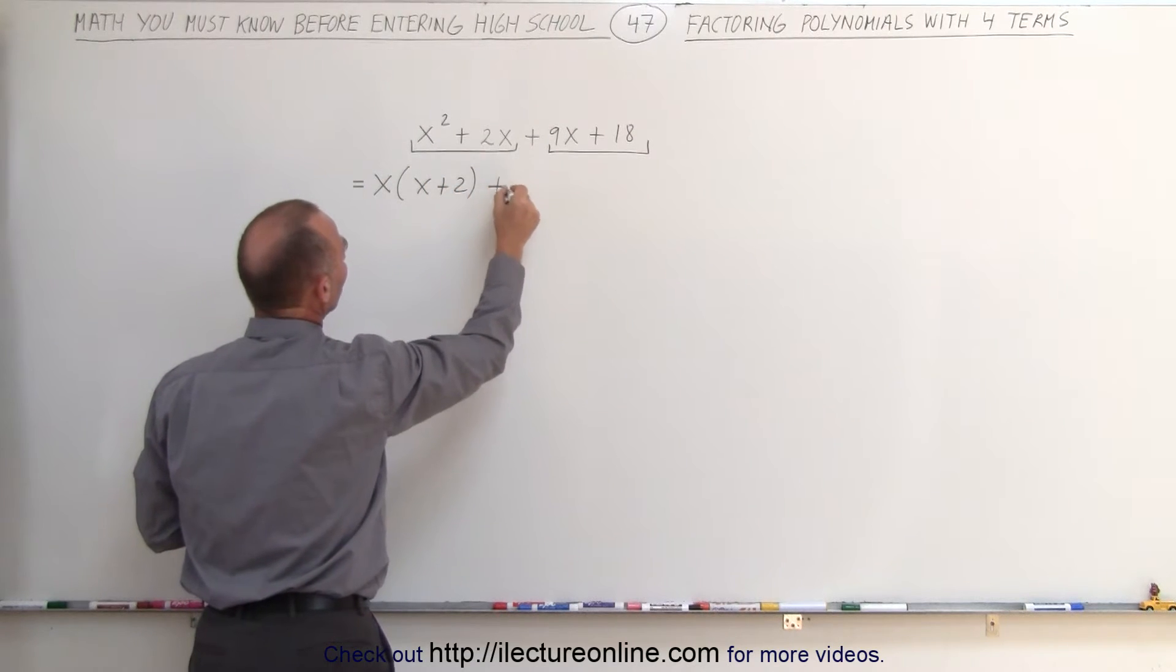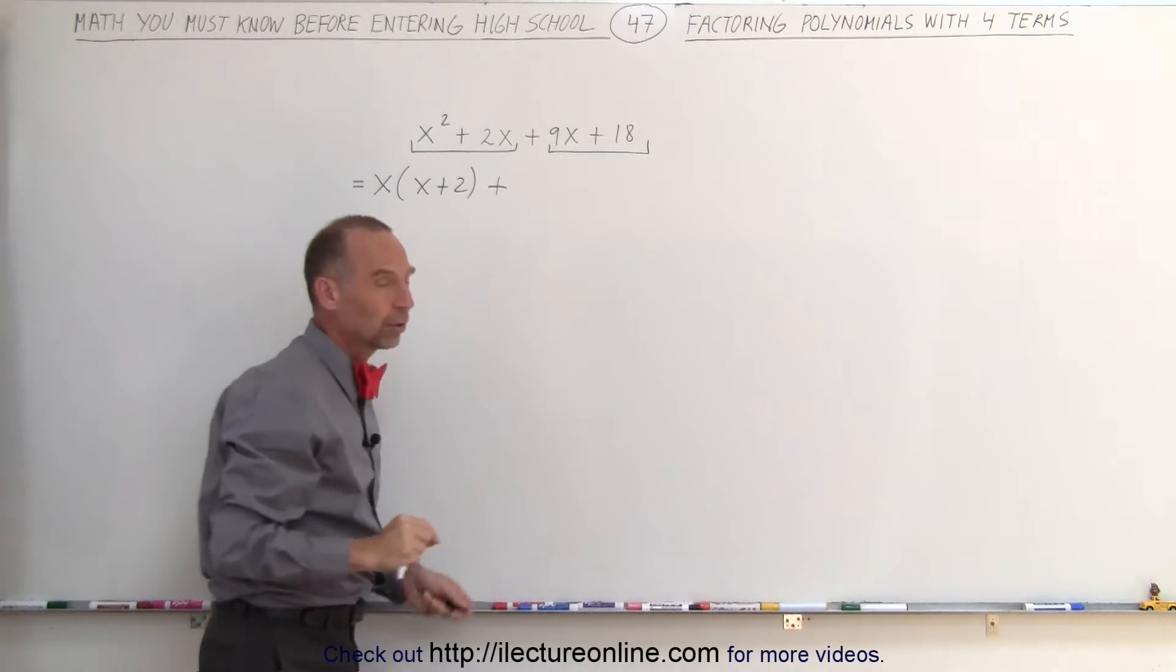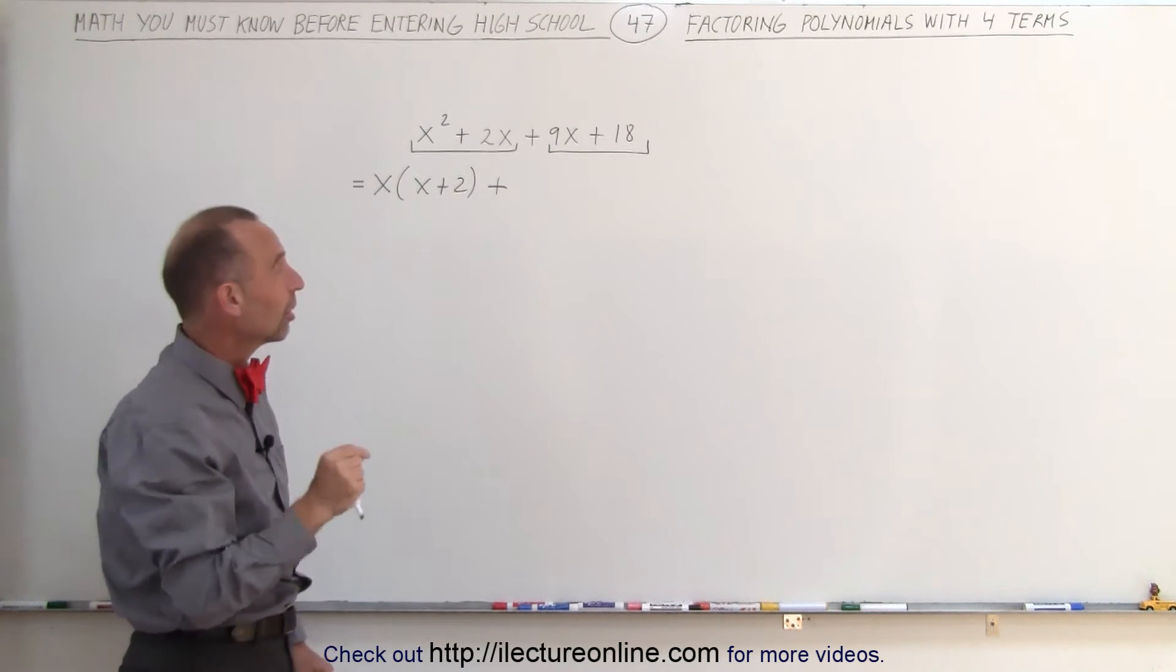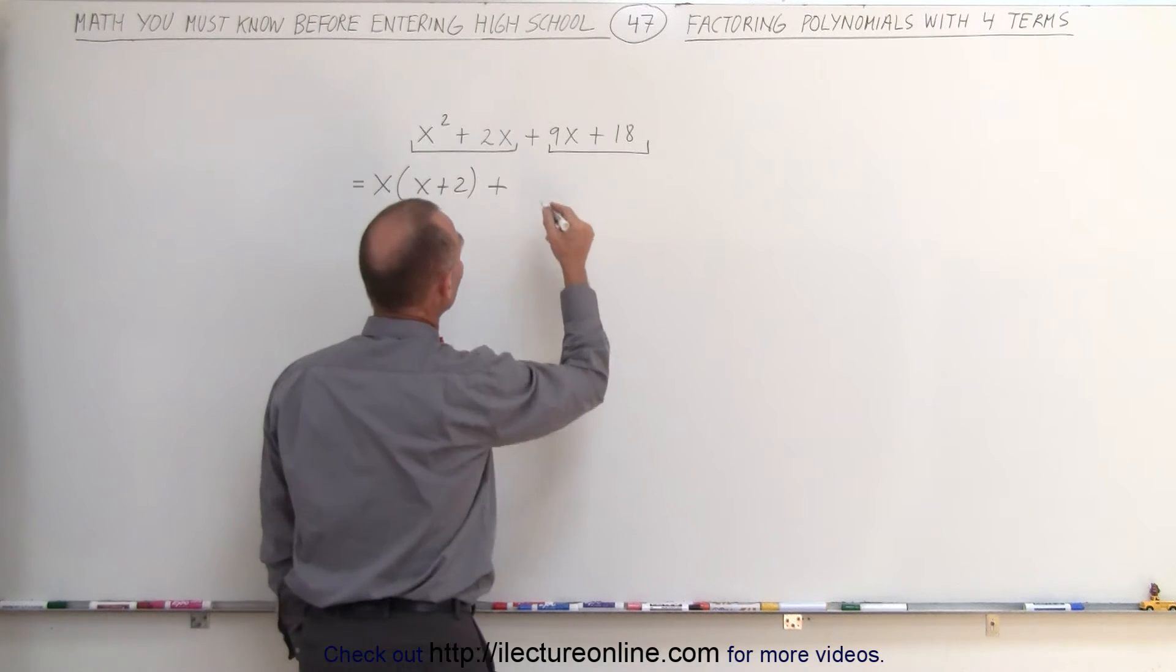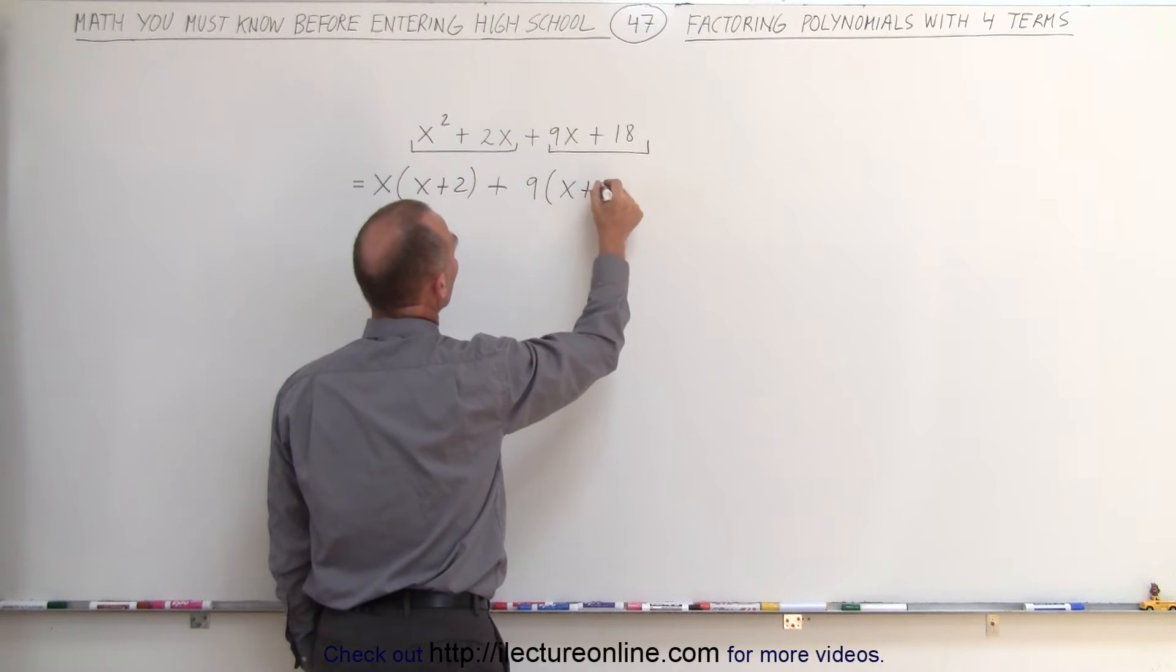Now we're going to add to that. We still have the plus here. Well, we can factor out of here. Notice we have a 9x and an 18. What's common between those two is the number 9. I can factor out a 9. When I do so, I get 9 times x plus 2.